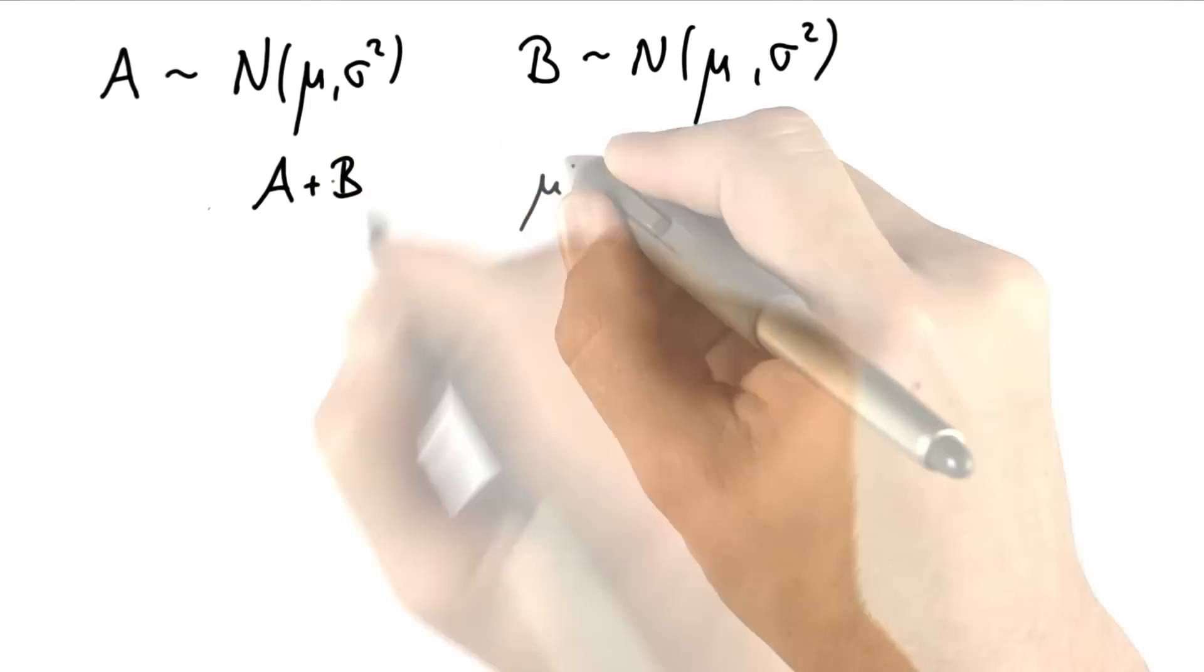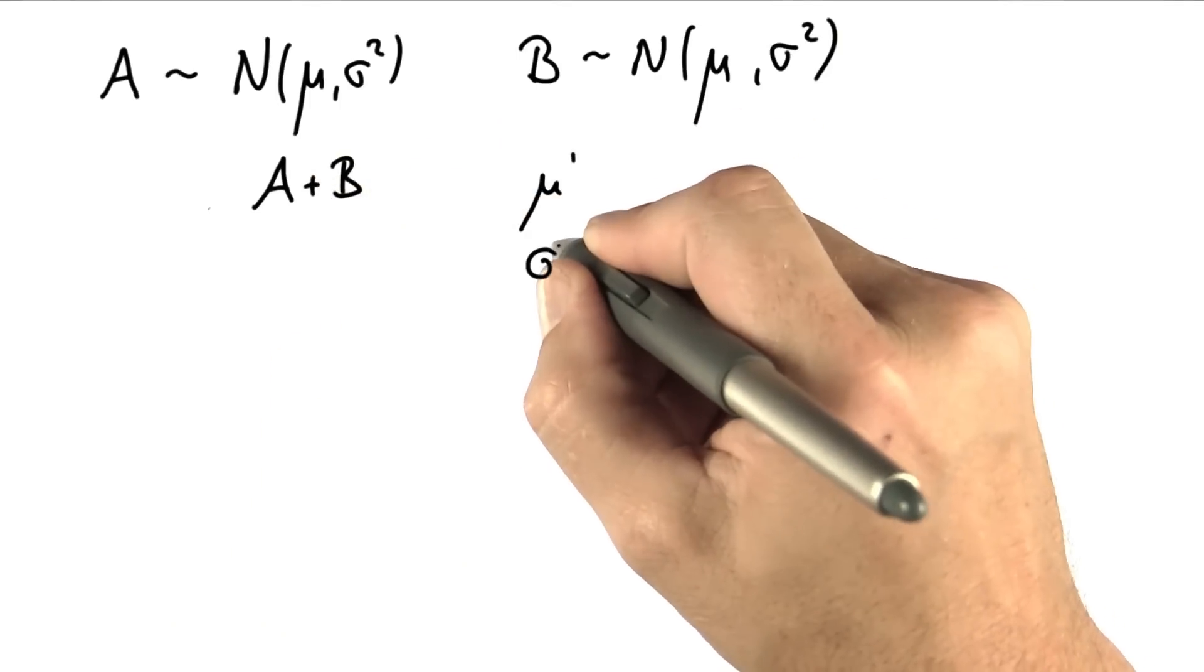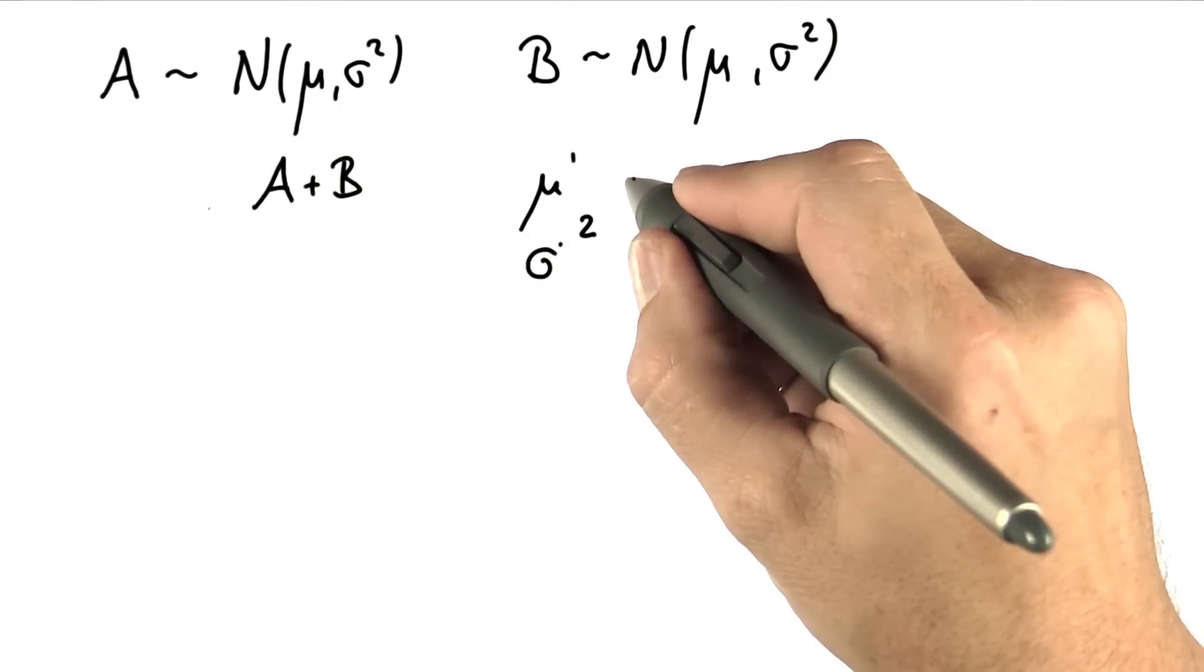Now we combine A plus B. We just add them up. Now we'd like to know how the new mu and the new sigma squared look like.